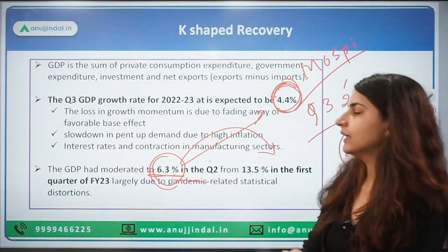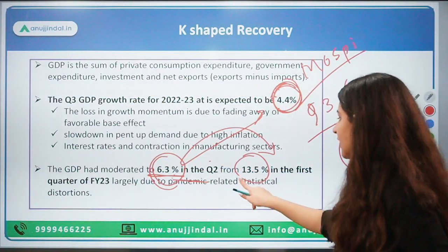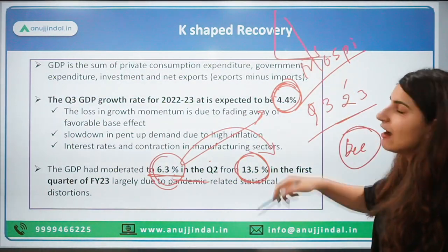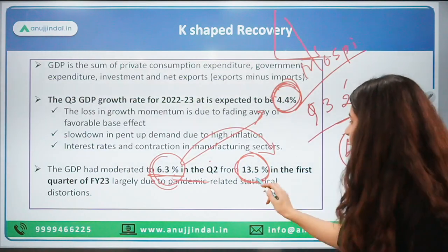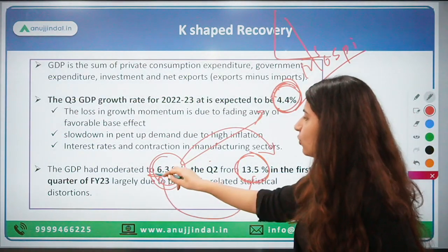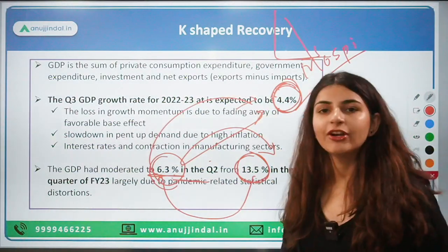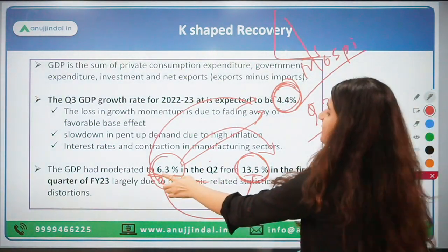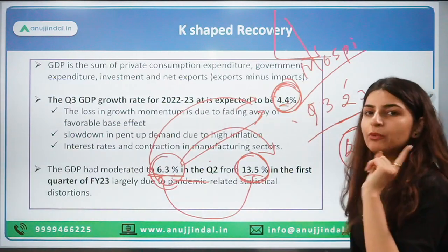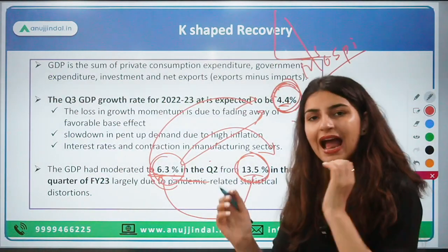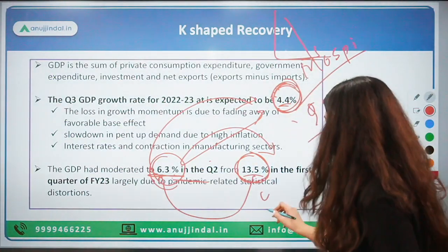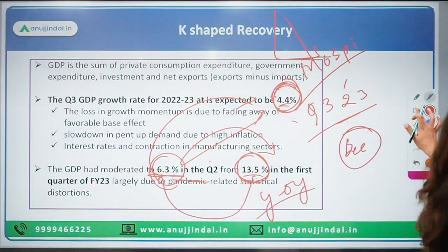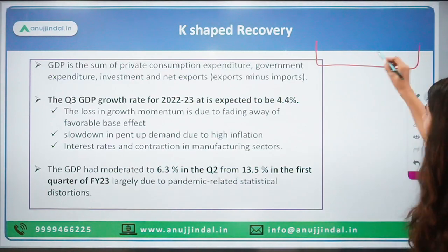So why has the growth been falling from 13.5 percent to 6.3 percent and now to 4.4 percent? The reason is that this growth percentage is compared with data from the previous year and the same quarter — it is year-on-year data.